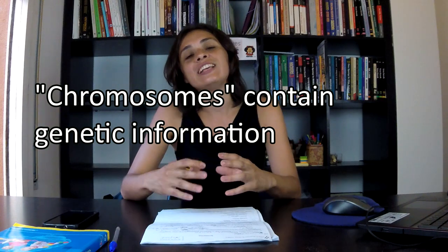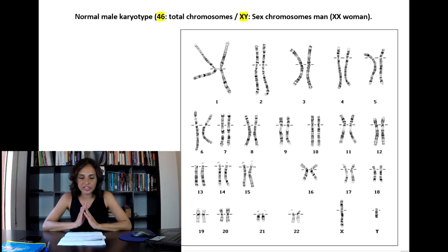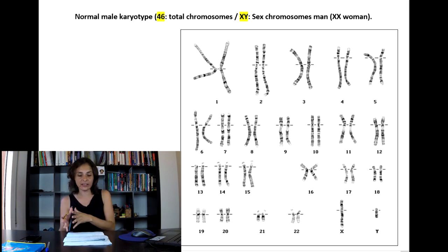As I said before, chromosomes are structures that are located inside the cell and contain genetic information. In the picture, we have an example of a normal male karyotype. A karyotype is a representation of all chromosomes in the cell. This karyotype is described as 46XY. 46 are the total number of chromosomes in a cell.